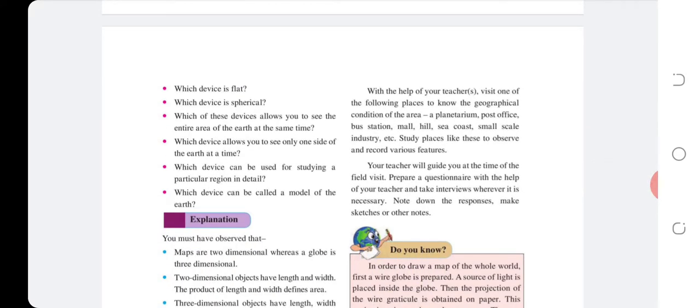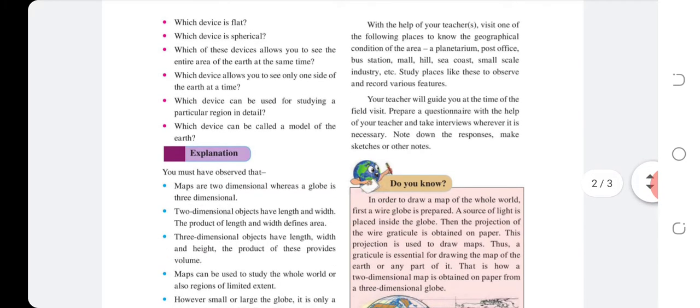Consider these questions: Which device is flat? Which device is spherical? Which of these devices allows you to see the entire area of Earth at the same time? Which device allows you to see only one side of the Earth at a time? Which device can be used for studying a particular region in detail? Which device can be called a model of the Earth?